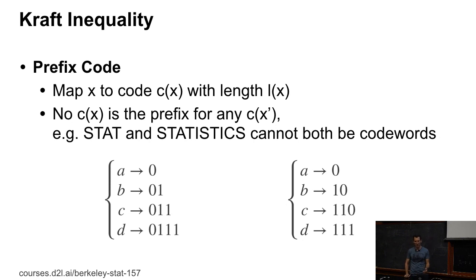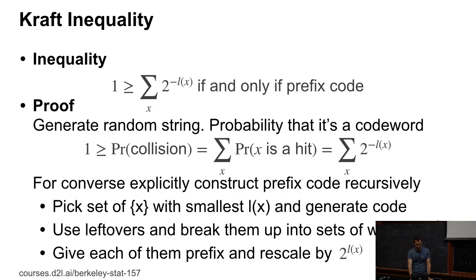So a maps into zero, b maps into one zero, and so on. Basically, prefixes cannot be individual code words. Then there's the Kraft inequality. The inequality says that if I have an encoding where the length of each string l(x) satisfies that the sum over 2^(-l(x)) is less than or equal to one, then first of all, every prefix code satisfies this. Secondly, if I have a length distribution of that type, then I can find the prefix code for it.